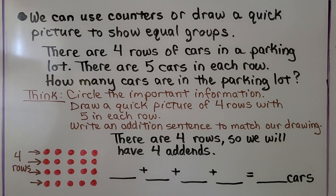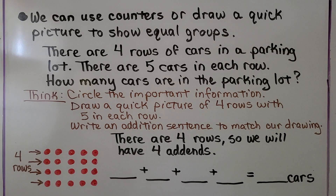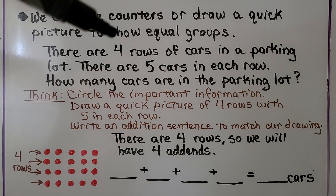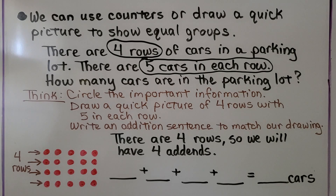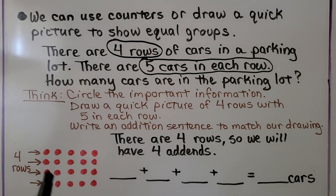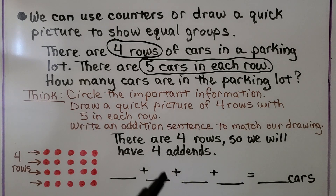We can use counters or draw a quick picture to show equal groups. There are 4 rows of cars in a parking lot. There are 5 cars in each row. How many cars are in the parking lot? We need to circle the important information — there are 4 rows and 5 cars in each row. We draw a quick picture of 4 rows with 5 in each row. We can just make little dots for the cars. We can write an addition sentence to match our drawing. There are 4 rows, so we will have 4 addends. There are 5 in each row, so our addend will be a 5 for each space.